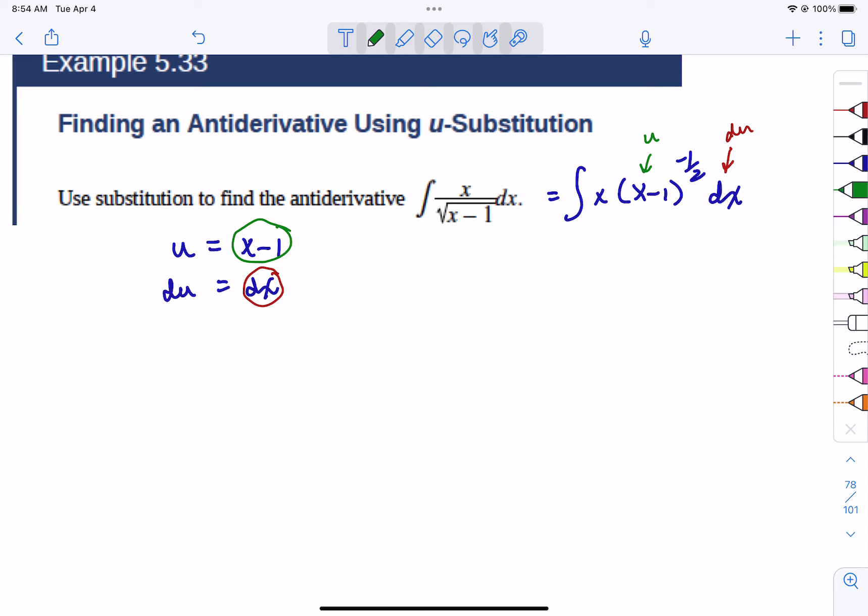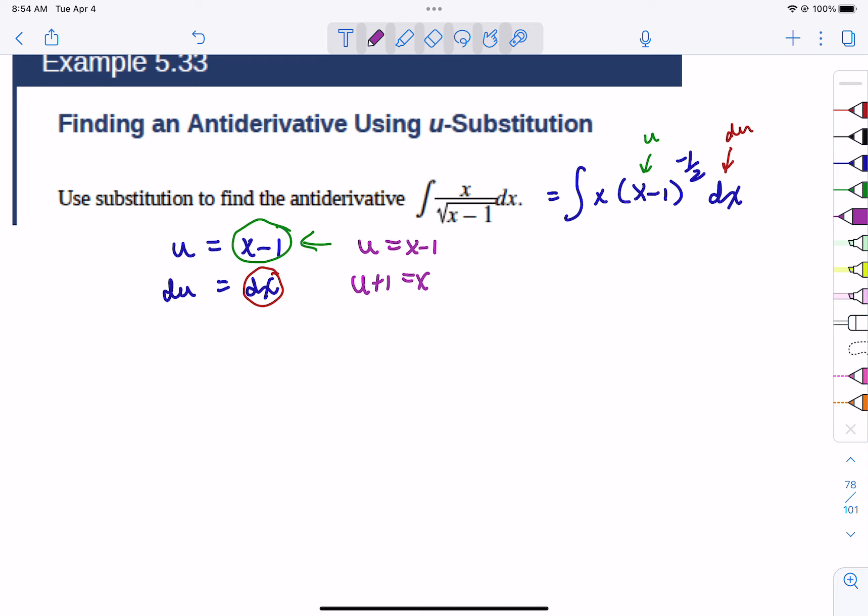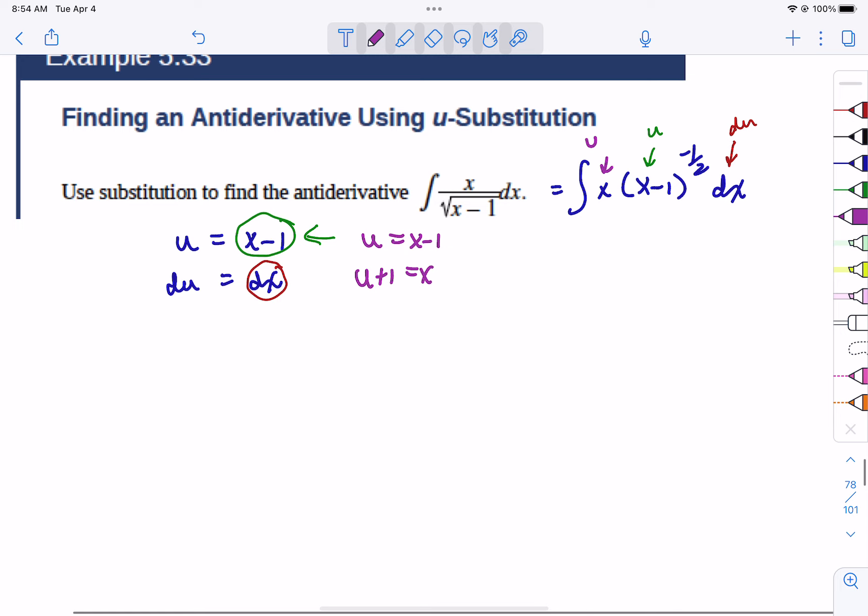But let's think algebraically, what we know. Would you agree, since u equals x minus 1, that x equals u plus 1? So don't we know that this is u plus 1? So we do know what x is. x is u plus 1.